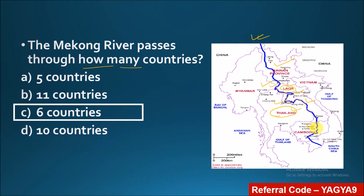So the countries covered are: China, Myanmar, Laos, Thailand — and next it goes to Cambodia, and after Cambodia it takes a turn into Vietnam, and from Vietnam it goes into the South China Sea. Total six countries: China, Myanmar, Laos, Thailand, Cambodia, and Vietnam. Note the river takes a U-turn through the course.